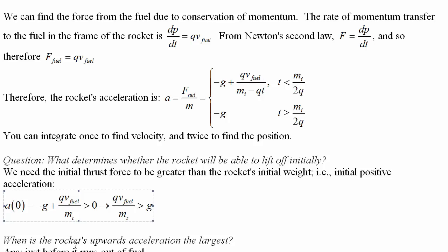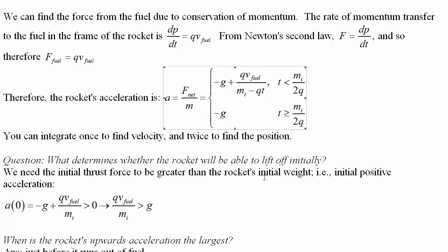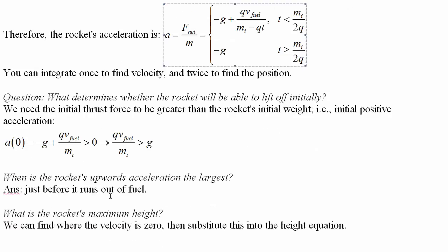When is the rocket's upward acceleration the largest? Looking at the equation, as time increases, the mass decreases. So the acceleration is actually increasing throughout the trajectory, all the way until just before it runs out of fuel.